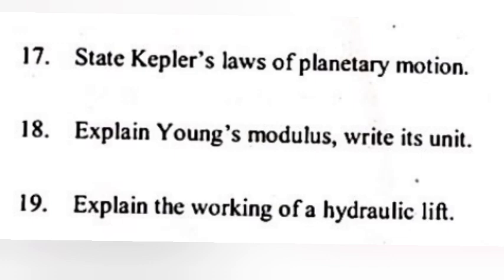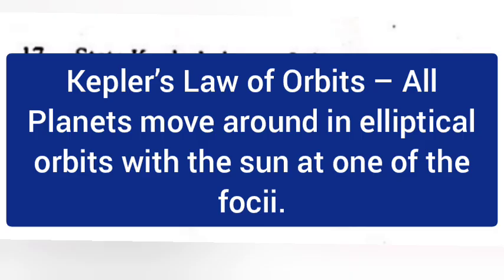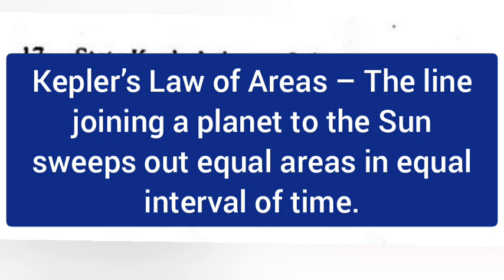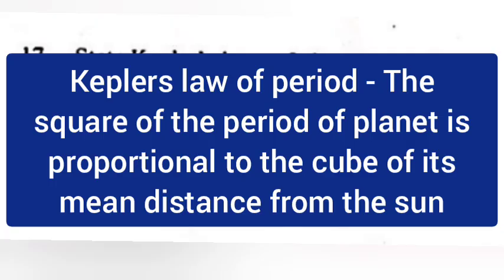Question 17: State Kepler's law of planetary motion. Answer: First law, Kepler's law of orbits - All planets move around in elliptical orbits with the Sun at one of the foci. Second law, Kepler's law of areas - The line joining a planet to the Sun sweeps out equal areas in equal intervals of time. Third law, Kepler's law of period - The square of the period of planet is proportional to the cube of its mean distance from the Sun.